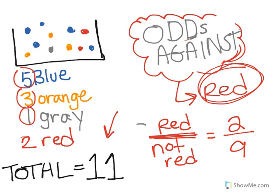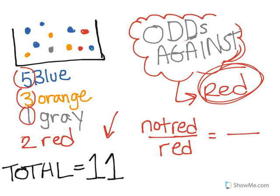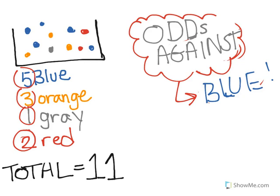If we wanted to find the odds against red, all you do is flip it — not red goes on the top and red goes on the bottom. There are two red in the box, and 11 minus 2 means 9 are not red. So the odds against picking a red marble are 9 to 2.